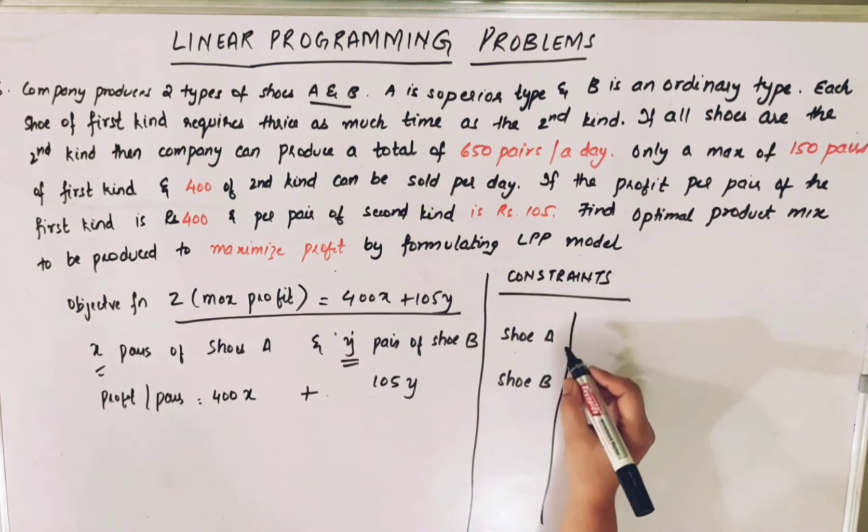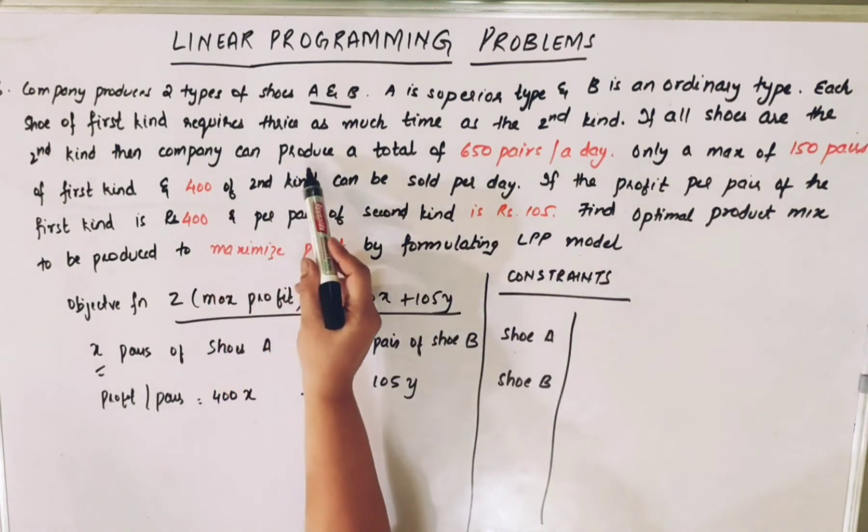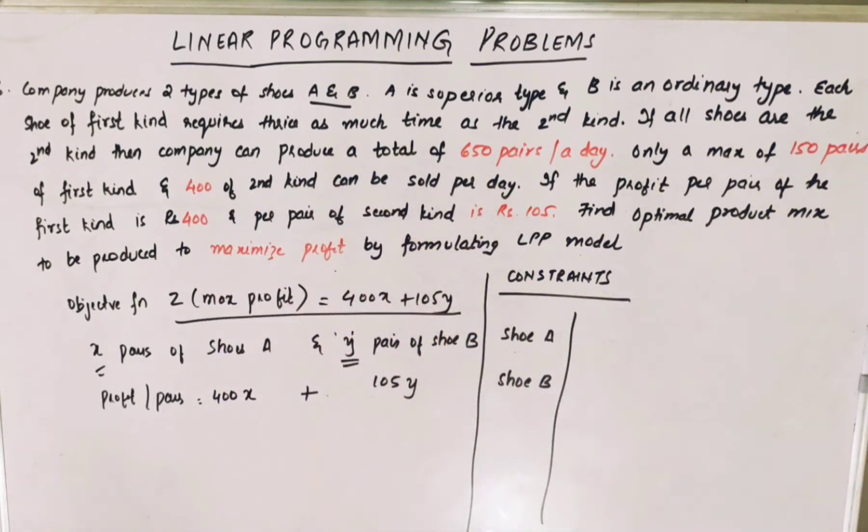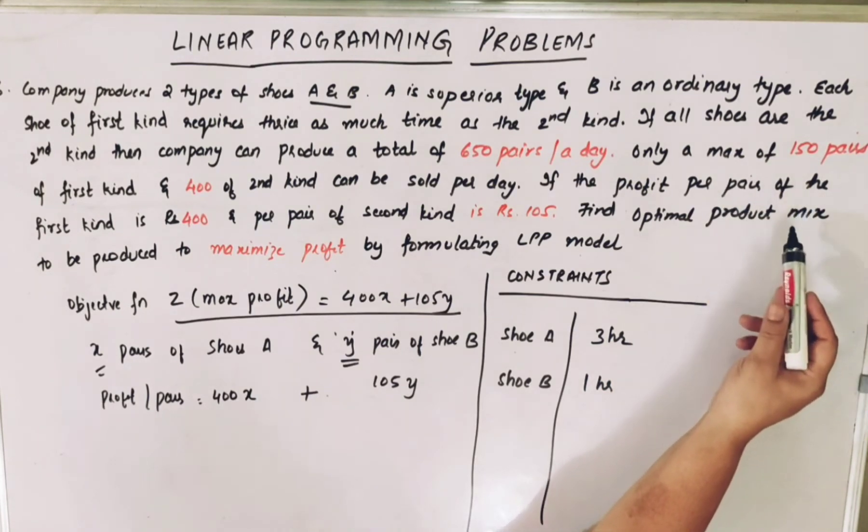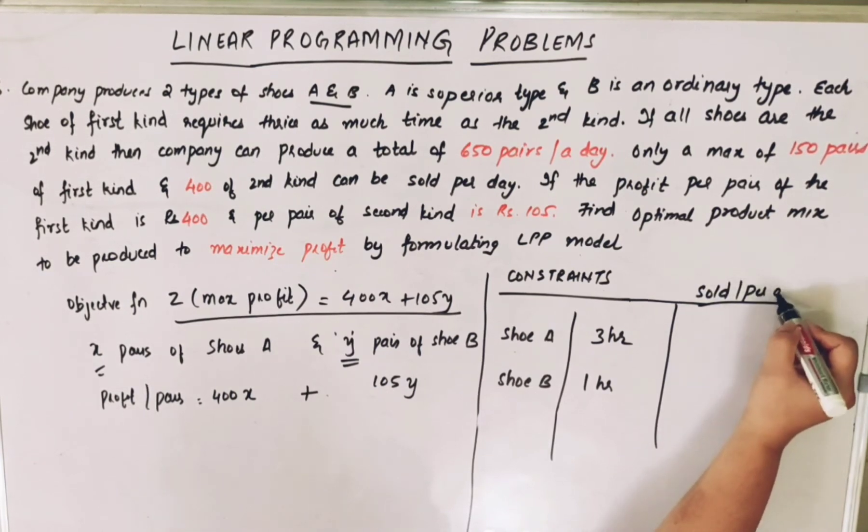Shoes A takes three times more time than shoe B. So if shoe B is taking one hour, shoe A will take three hours. And what is the maximum amount of shoes that can be sold? The number of shoes that can be sold per day.